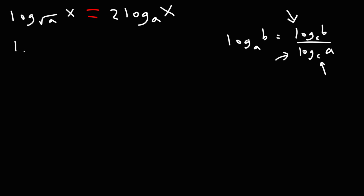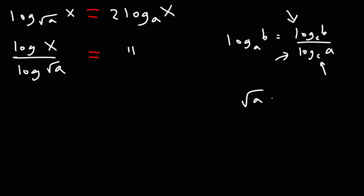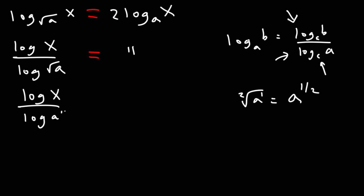I'm going to rewrite log base square root a of x as log x over log square root a. Now the square root of a is equal to a to the 1/2, since a is the same as a to the first power and if there's no index next to the radical, it's assumed to be 2. So it's a to the 1/2, and we can rewrite this as log x over log a to the 1/2.